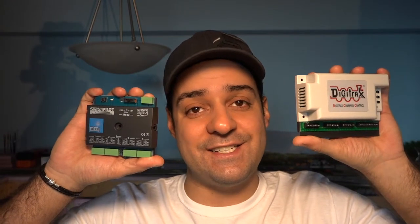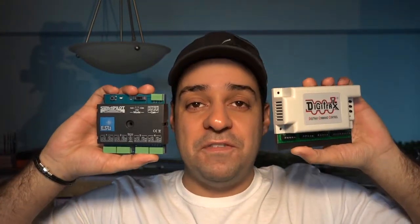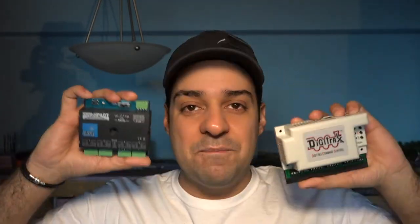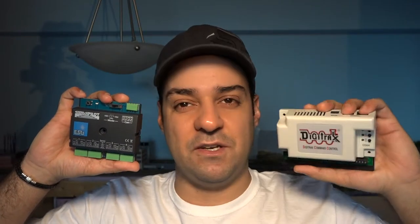So before we go on with the video, I want to just talk a little bit about these two awesome multipurpose accessory decoders. On my left, I have a DS 64. On my right, I have an ESU switch pilot. Both of these devices have four port accessory addresses going through one through four. Having both of these accessory decoders, I'm actually going to be going with the DS 64. And let me tell you why.